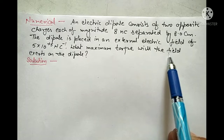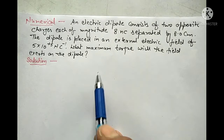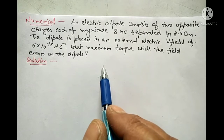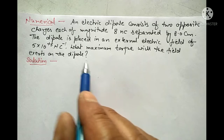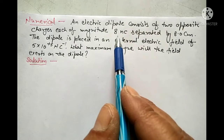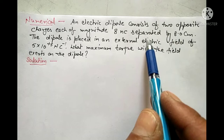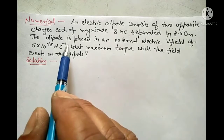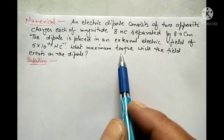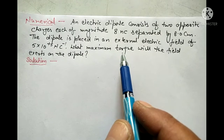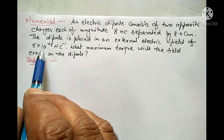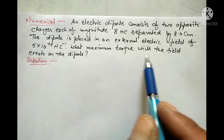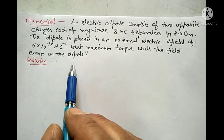What maximum torque will the field exert on the dipole? We have given an electric dipole which has two opposite charges, and the magnitude of each charge is 8 nanocoulomb. The distance between these two charges, i.e., the dipole length, is 8.0 cm. This dipole is placed in an external electric field of 5 × 10⁵ Newton per Coulomb. We have to calculate the maximum torque exerted on the dipole.